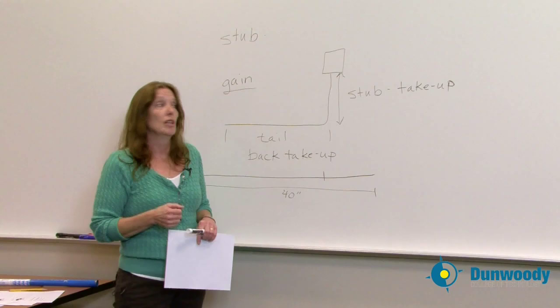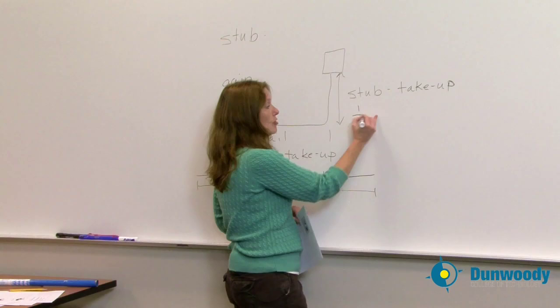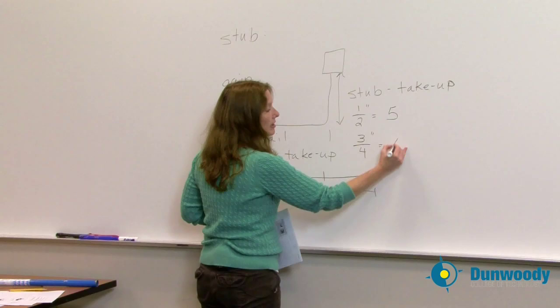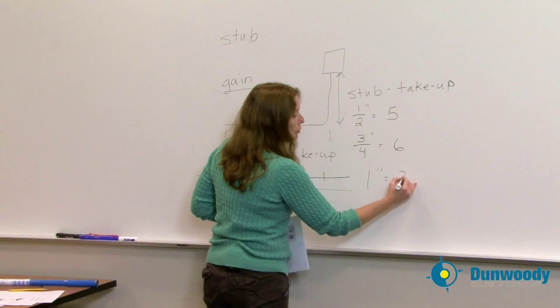So most common numbers for a stub take up value for a half inch EMT is 5. For a three quarter inch EMT, it is 6. For a one inch EMT, it would be 8.